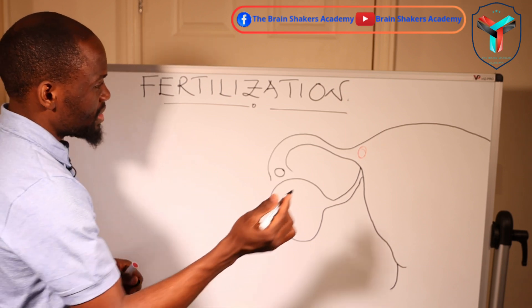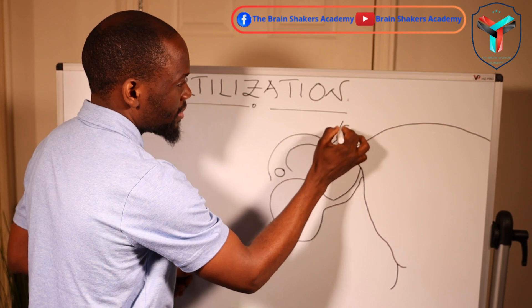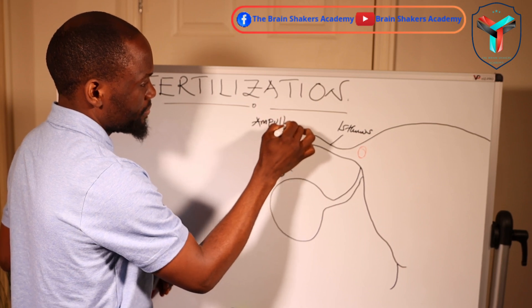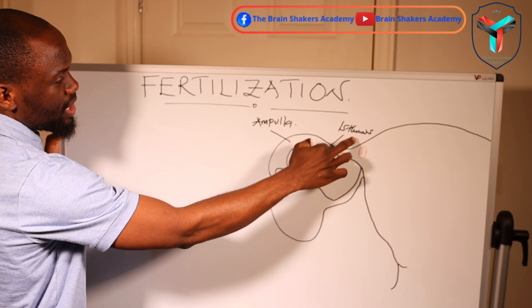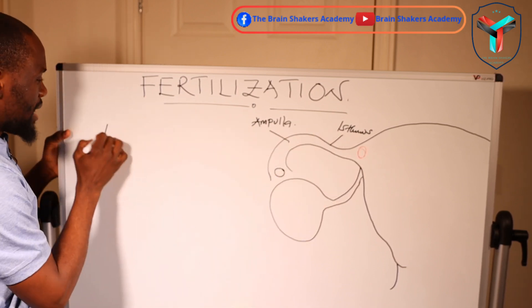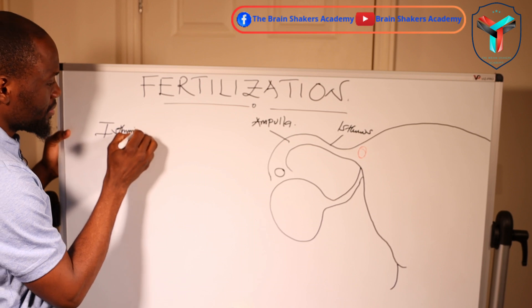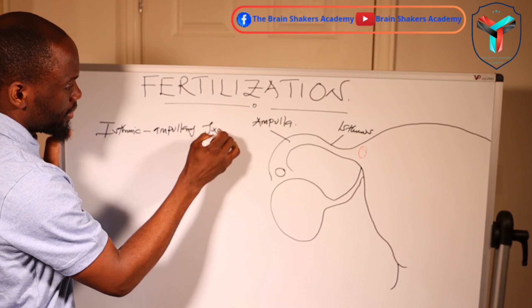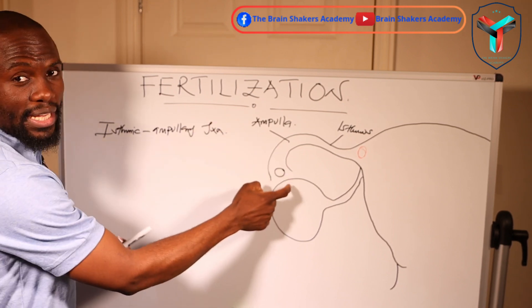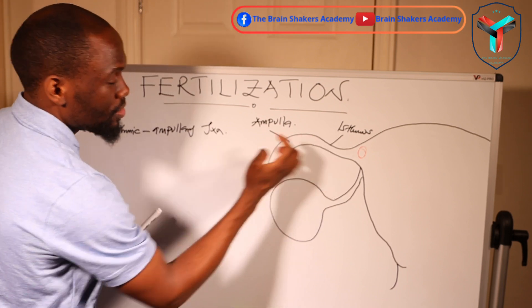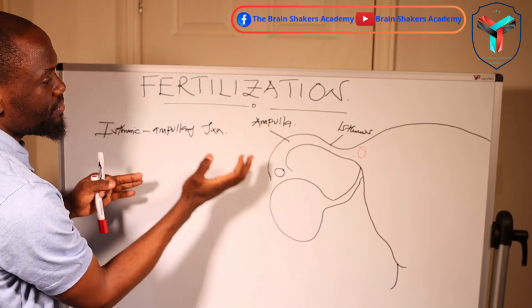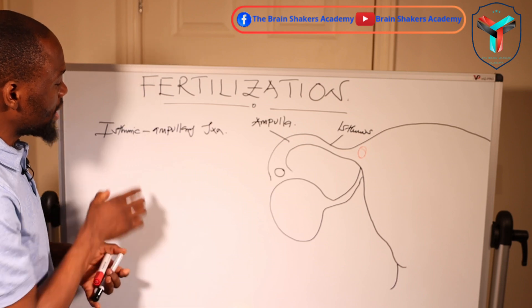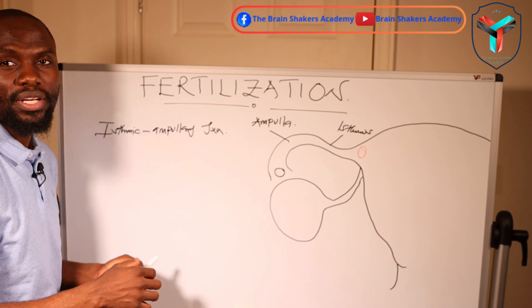The area of fertilization is the isthmus and the ampulla. The junction between the isthmus and the ampulla is known as the isthmic ampullary junction. The ovum is propelled toward this junction, and most fertilization tends to occur in the ampulla, close to the isthmic ampullary junction.